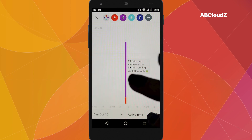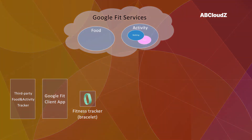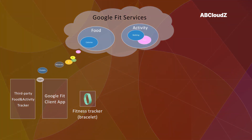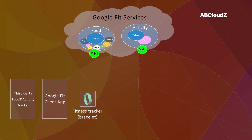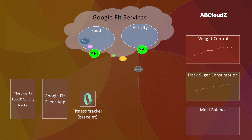Unfortunately, the default Google Fit application doesn't display any food-related information, but all such data which is being collected by Google Fit can be obtained through the provided API. This information can be used in other narrowly focused applications, for example, that are designed to help control your weight, track sugar consumption, or help you balance your meals.